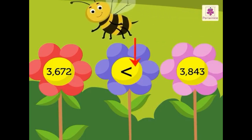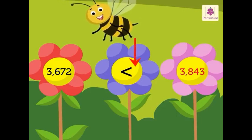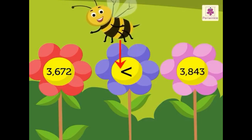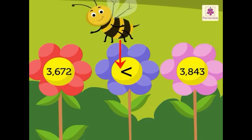You already know, the open side of the sign always points towards the greater number. The closed side of the sign always points towards the smaller number.